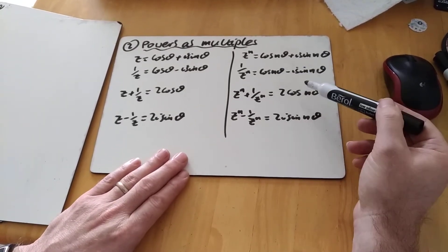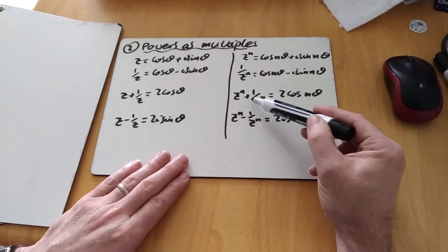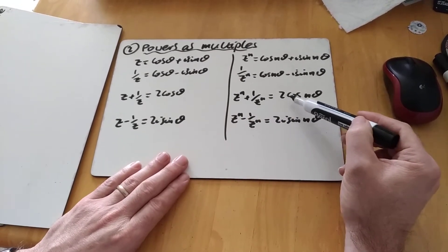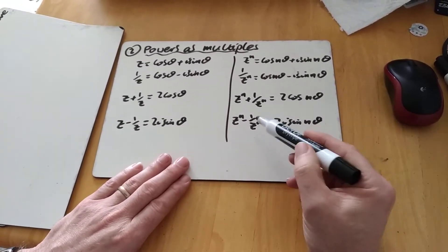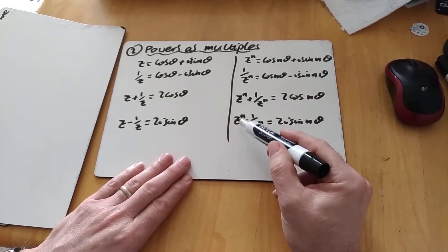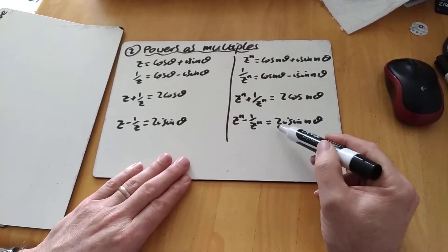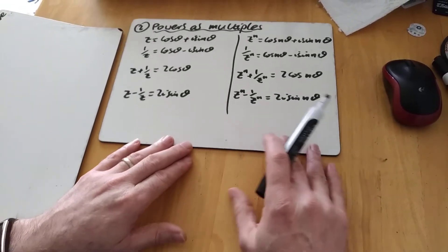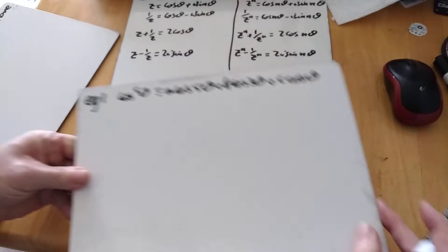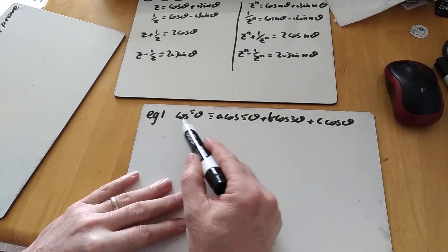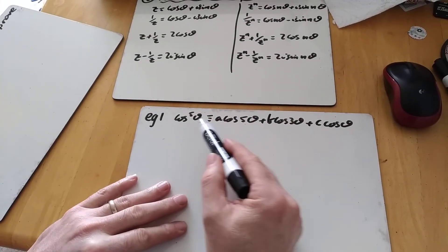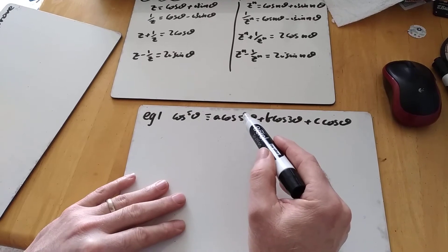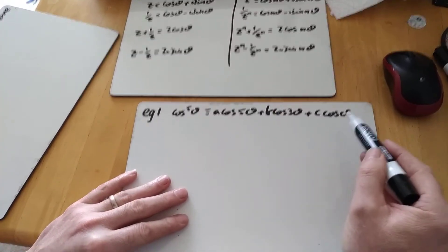And in exactly the same process, add the two equations, we get z to the n plus 1 over z to the n, which is 2 cos n theta. And we subtract the two equations, we get z to the n minus 1 over z to the n equals 2i sine n theta. And those are what we're going to be referring to when we look at rewriting expressions like cos to the power of 5 theta as multiples of cos 5 theta, cos 3 theta and cos theta.